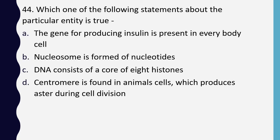Question 44. Which one of the following statements is true? The gene for producing insulin is present in every body cell; nucleosome is formed of nucleotides; DNA consists of a core of 8 histones; or centromere is found in animal cells which produces aster during cell division. Correct answer is option A: the gene producing insulin is present in every body cell.